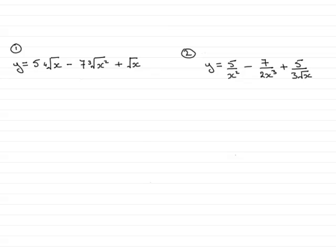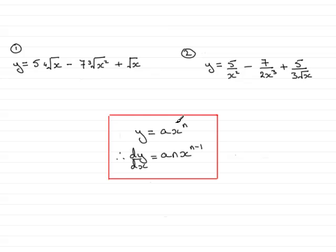Any of these terms can be reduced down to the form ax to the power n, where a and n are constants. And it can be shown that to differentiate any of these terms, you get the result an times x to the power n minus 1. In other words, you just multiply the power by the number in front of x and then reduce the power by 1.